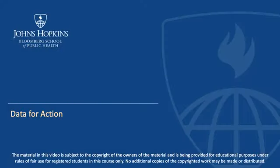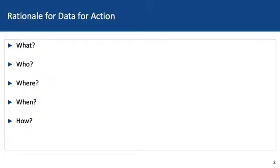In this section, we're going to talk about data for action. Public health surveillance data is all about action. Why do we need data to act? We're really going to be most efficient and effective in our actions to protect public health if those actions are informed by data.